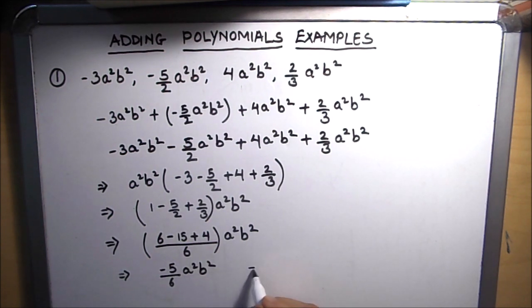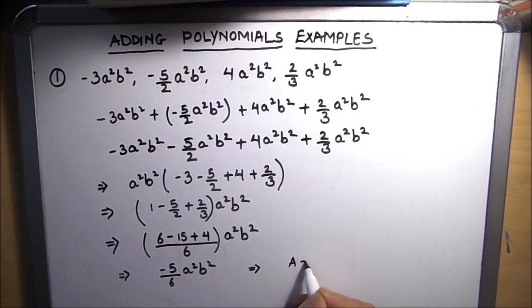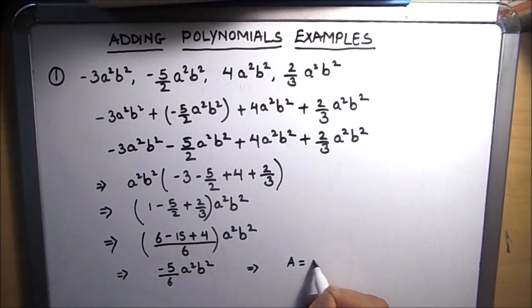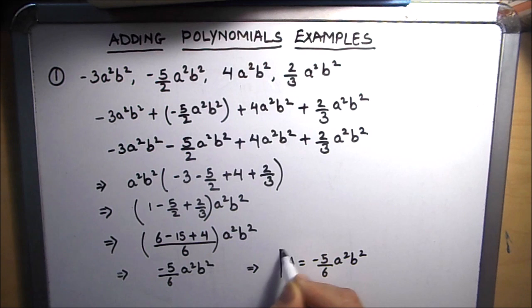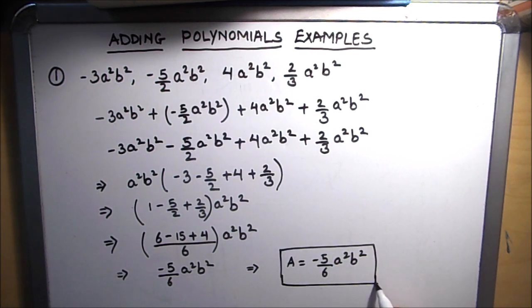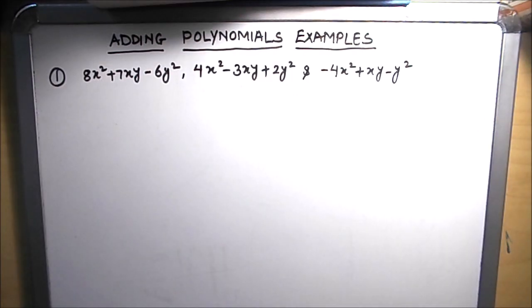So our final answer is minus 5/6 a²b². Let's move on to our next example.